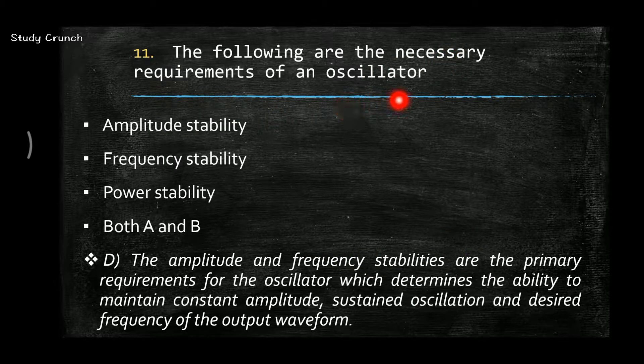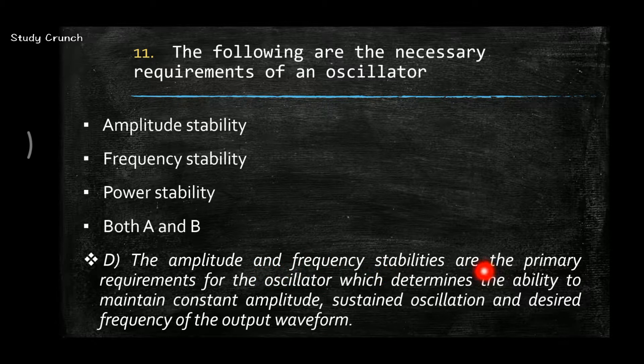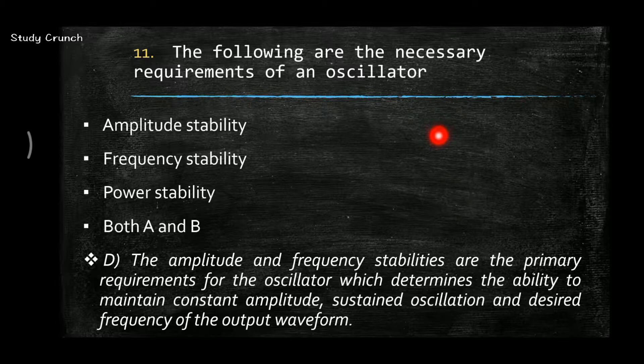What are the necessary requirements of an oscillator? The answer is both A and B, i.e. D. Amplitude stability and frequency stability are primary requirements of the oscillator which determines the ability to maintain constant amplitude, sustained oscillations, and desired frequency at the output waveform.